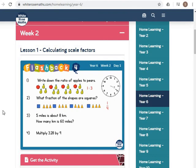Number three, five miles is about eight kilometers. How many kilometers is 60 miles? For that one, you should have got 96.